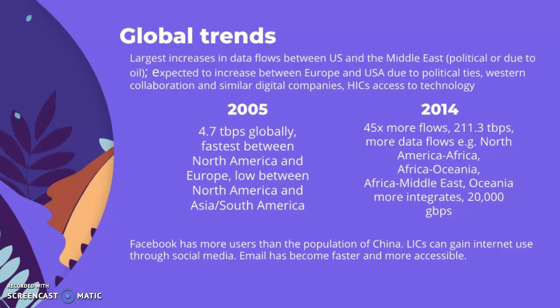Oceania became more integrated with the globe in general, with the highest speed reaching around 20,000 gigabytes per second. Facebook has more users than the population of China. LICs have gained internet use through social media and email, which has become faster and more accessible — playing a large role in the trend of global data sharing.